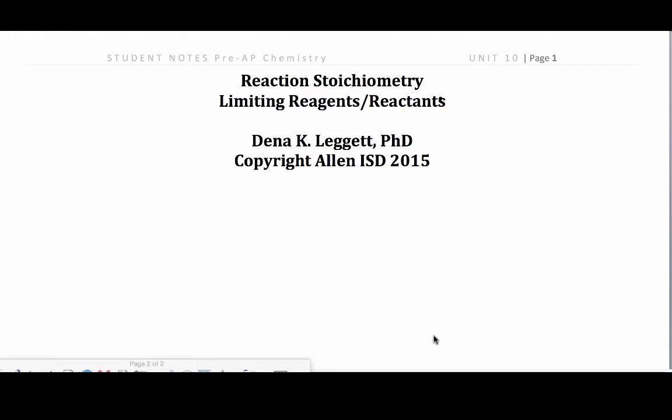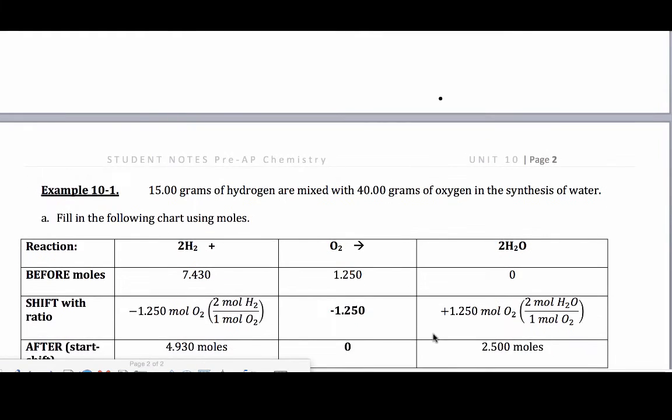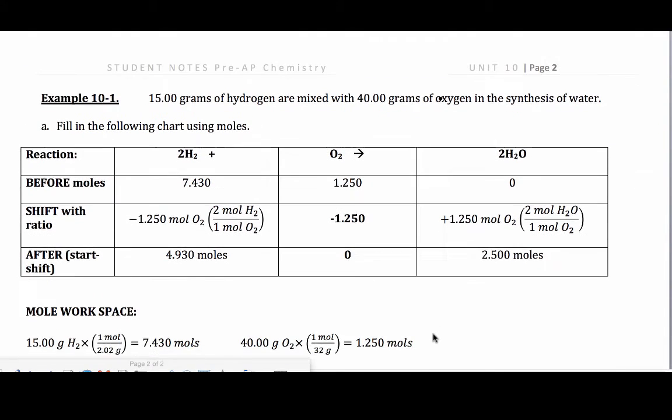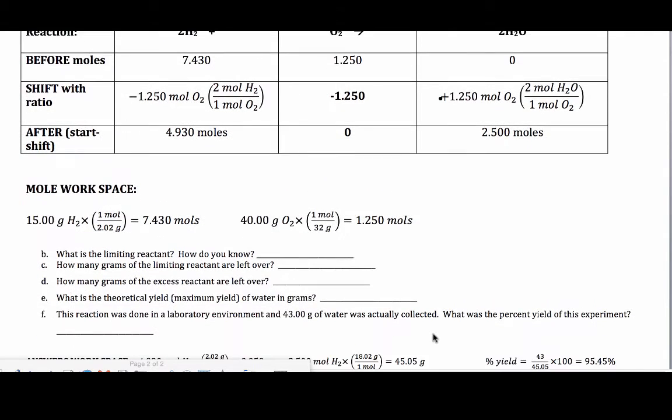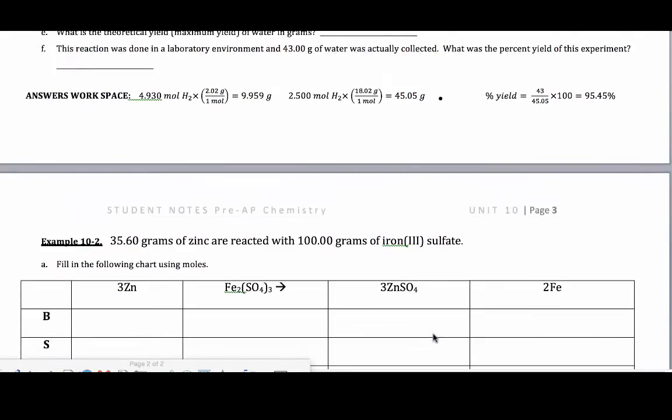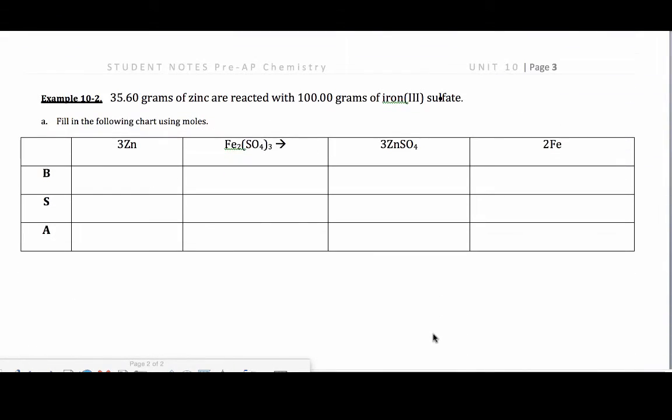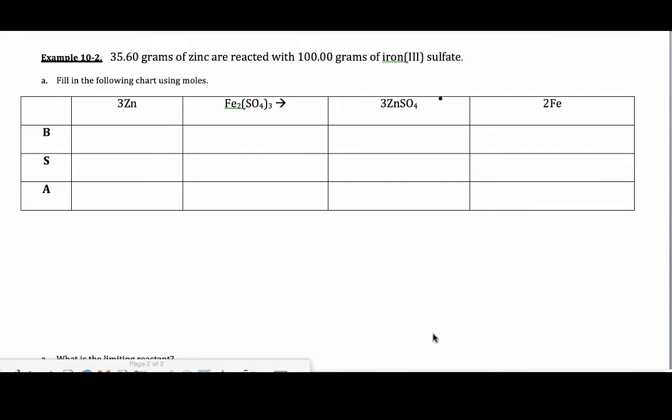Hi, and welcome to Allen High School's discussion of reaction stoichiometry and limiting reagents at the 10th grade or pre-AP chemistry level. We're glad you joined us. We are at the end of this unit. Now, I'm not going to work this first problem for you.